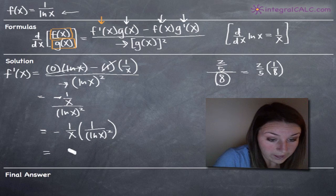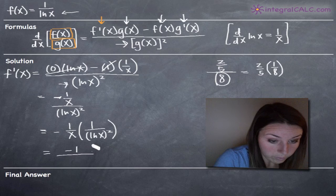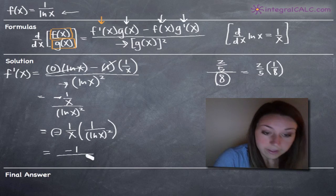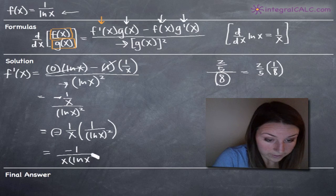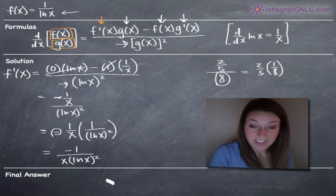So notice that we're going to end up with negative 1 in the numerator because we've just got 1 times 1 with this negative sign out here. And then in the denominator, we'll end up with x times the natural log of x squared. And that's it. That's about as much as we can simplify.